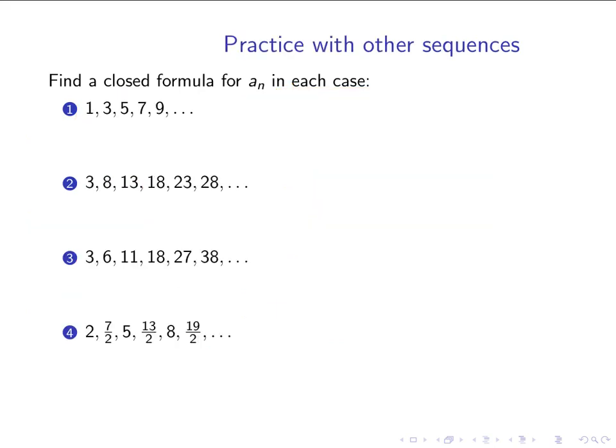This final slide has some examples for you to try. These all fit the patterns we've seen: two are arithmetic progressions, one is a geometric progression, and one can be compared to the sequence of perfect squares. Pause the video and see if you can figure out which is which. Once you think you have a formula for a_n, plug in something like n equals 5 and check whether it gives you the fifth term. I'll count to three and then progress to the slide with the answers.